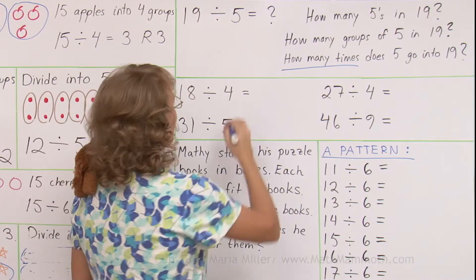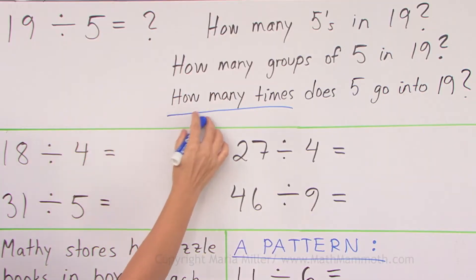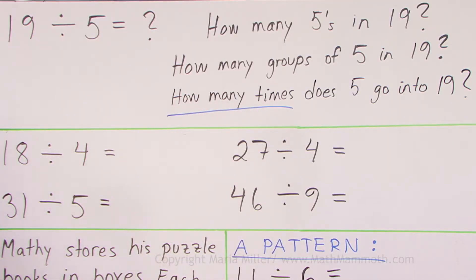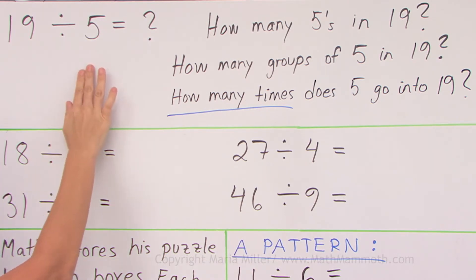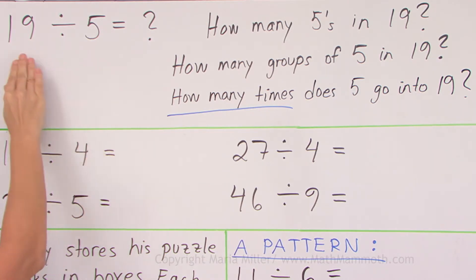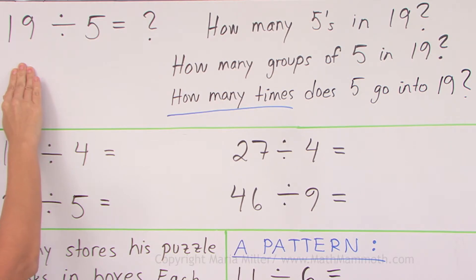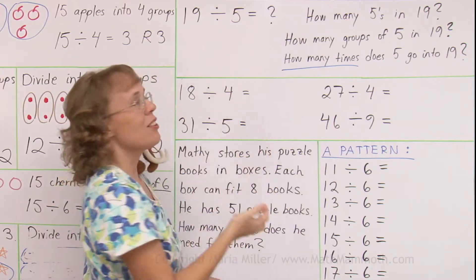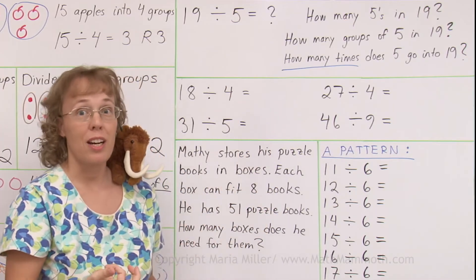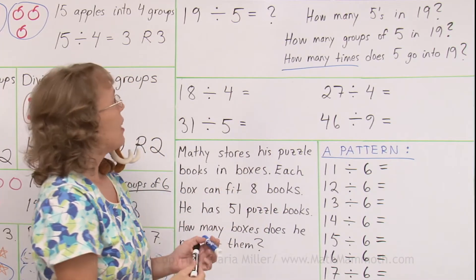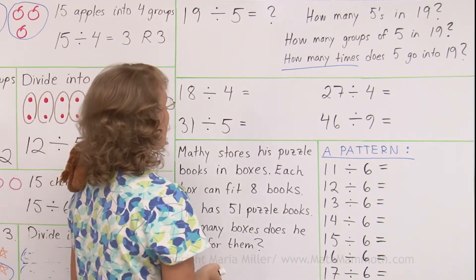So you can think: 3 times 5 would be 15. 4 times 5 would be 20. We cannot get 4 groups out of 19, right? 4 groups of 5. So therefore we only get 3 groups of 5.